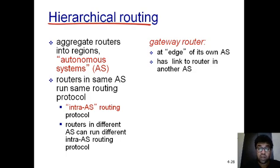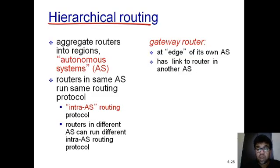After that, we have to connect those autonomous systems together to provide the routing facility. Connecting autonomous systems and providing routing between them is the job of inter-domain routing algorithms. The protocol used is Border Gateway Protocol, which is based on path vector. Each autonomous system has a gateway router at its edge with a link to a router in another autonomous system.